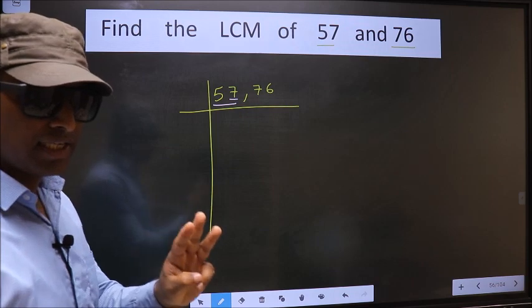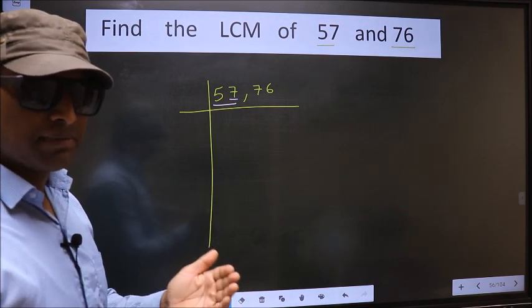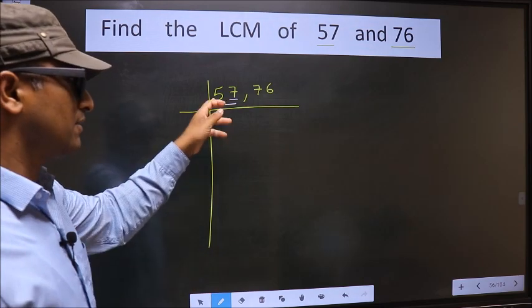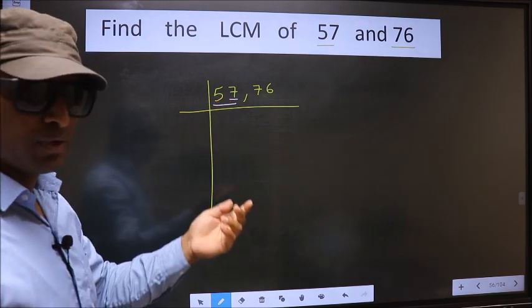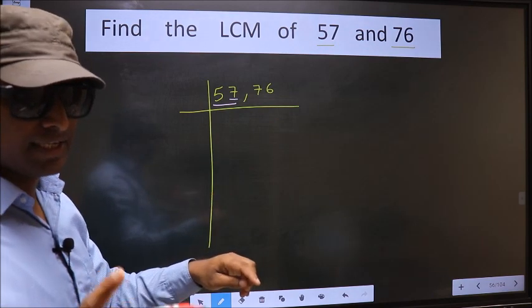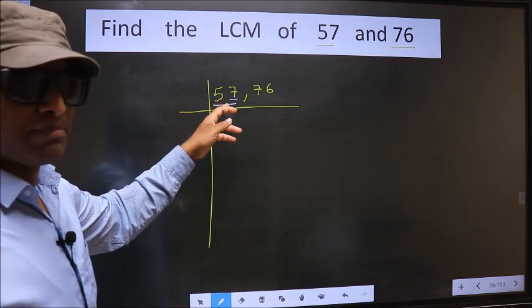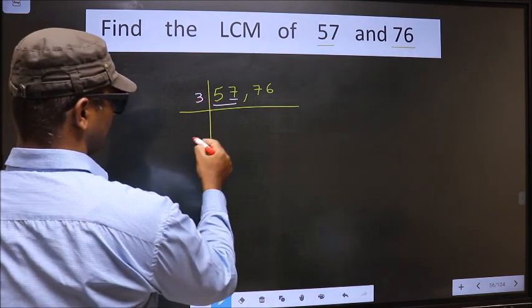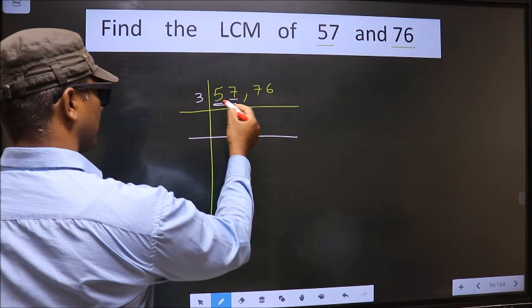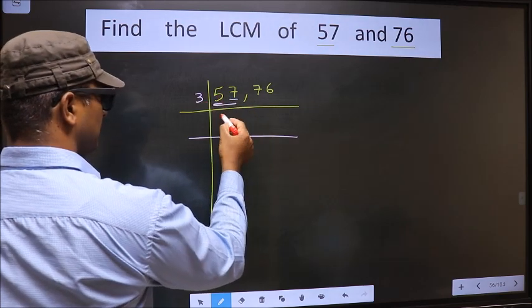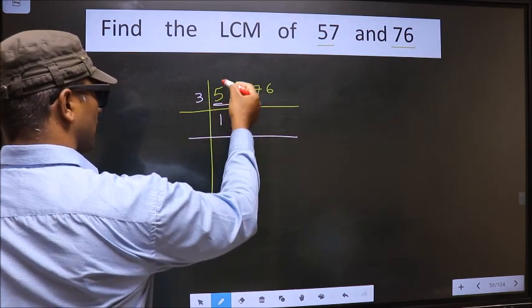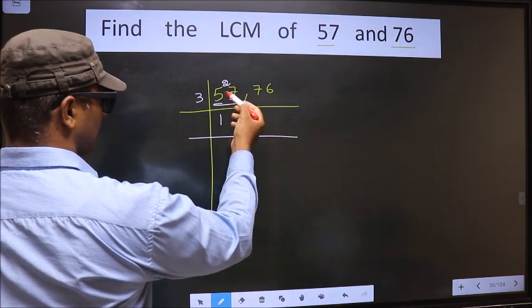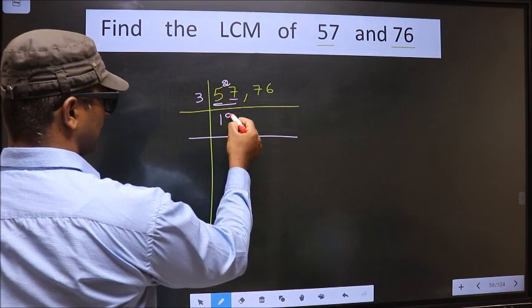Next prime number 3. To check divisibility by 3, we should add the digits, that is 5 plus 7, 12. Is 12 divisible by 3? Yes. So this number is also divisible by 3. So we take 3 here. The first number 5. A number close to 5 in 3 table is 3 once 3. 5 minus 3, 2, 2 carried forward making it 27. When do we get 27 in 3 table? 3 nines, 27.